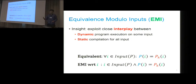The insight here is that we explored the close interplay between the dynamic program execution and the static compilation. For compilers, the compiler should guarantee that any program transformation performed in the optimizers should be semantics preserving for all the input of the program. But when we are testing a compiler, we only use a program. We do not exhaust the entire input space. We only use several inputs to run the program to check whether the compiler performs correctly or not.